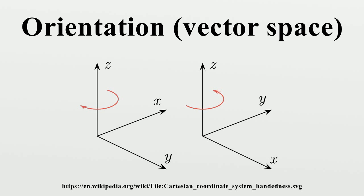Definition: Let V be a finite-dimensional real vector space and let B1 and B2 be two ordered bases for V. It is a standard result in linear algebra that there exists a unique linear transformation A: V to V that takes B1 to B2.